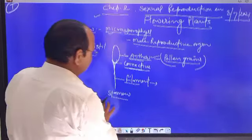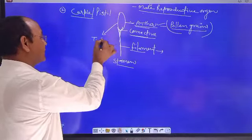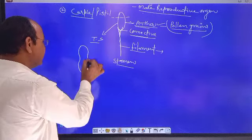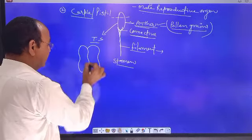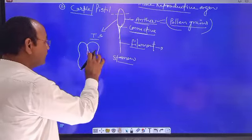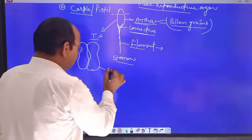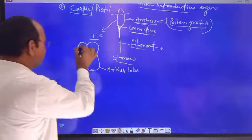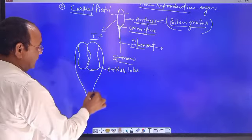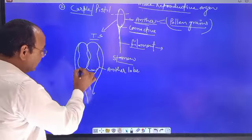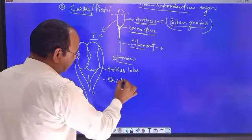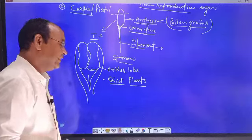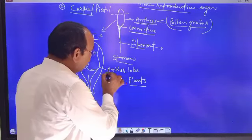In the transverse section of anther, we can see one or two lobe-like structures. These are called anther lobes. Especially, two anther lobes are present in dicot plants.